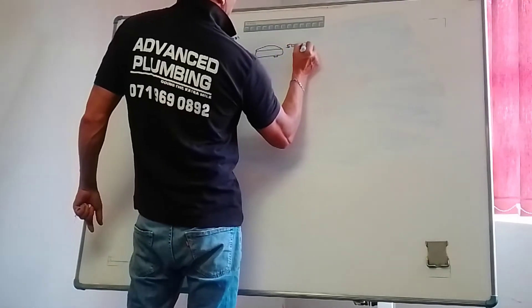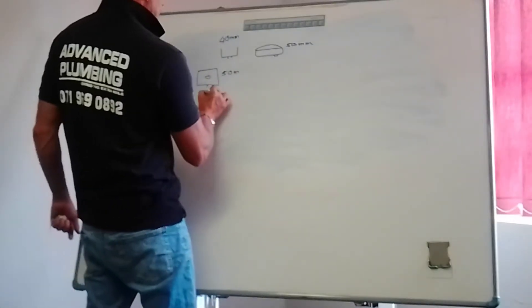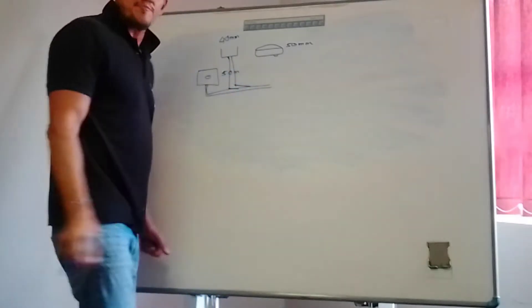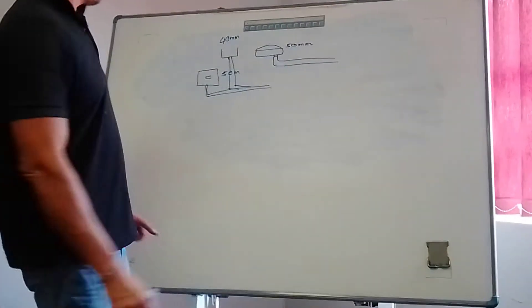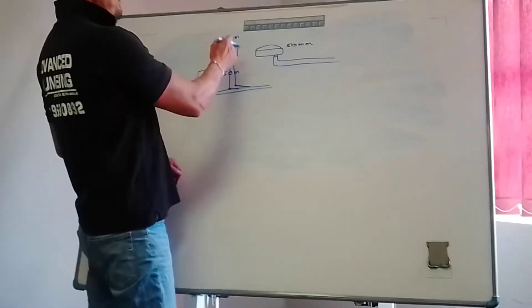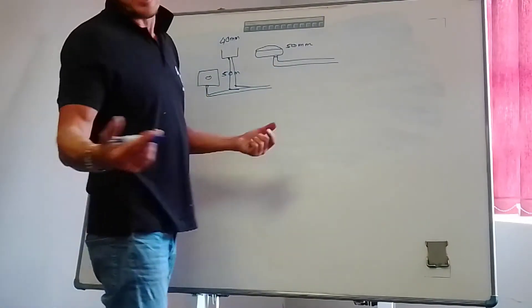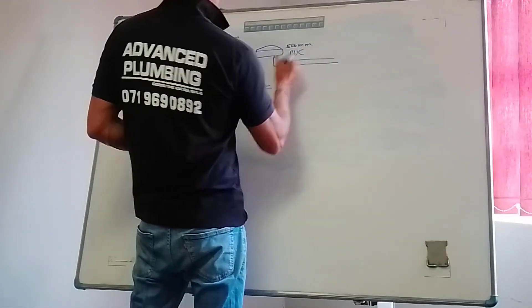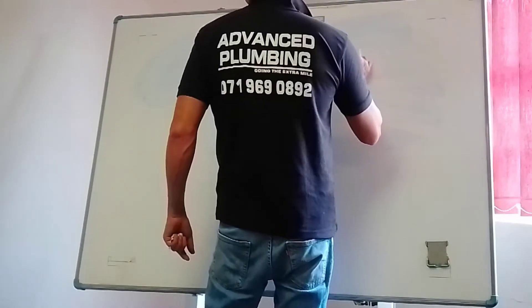On a bath, 50 millimeter. On a shower, 50 millimeter. Rules in plumbing: basin and shower can be connected. Bath must always run out separate on the 50 millimeter line. So now you understand you need 40mm PVC pipe for your basin, 50mm for your shower. Basin and shower can run together or you can run it out separately, it just depends on your application. Your bath is 50 millimeter PVC.